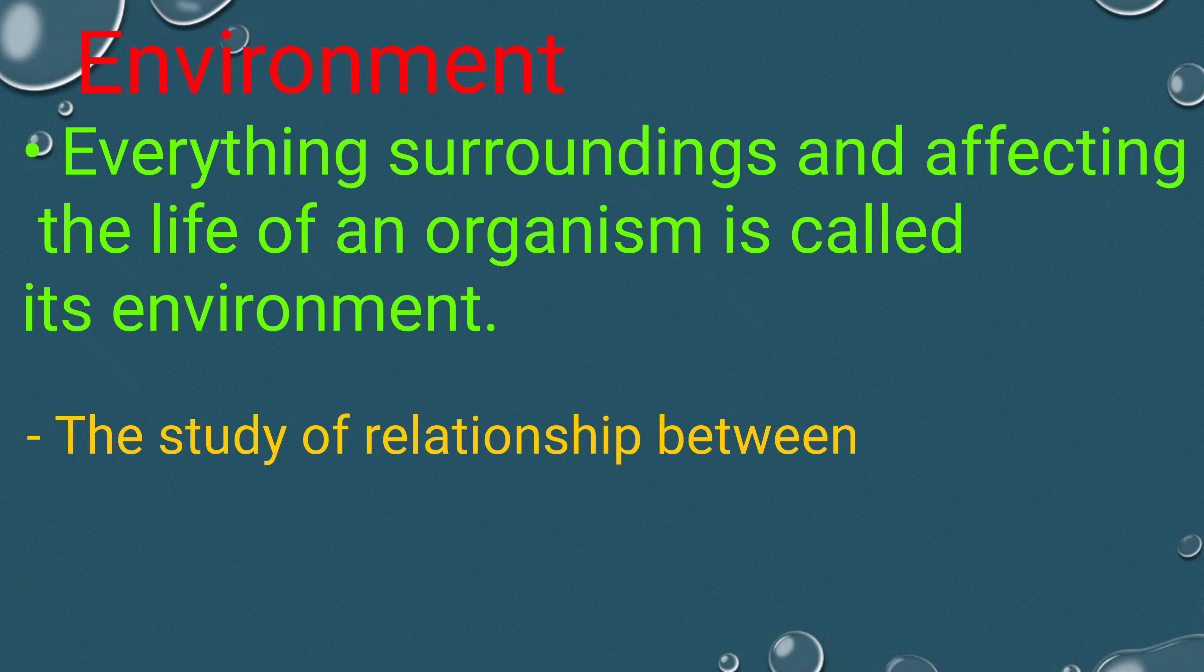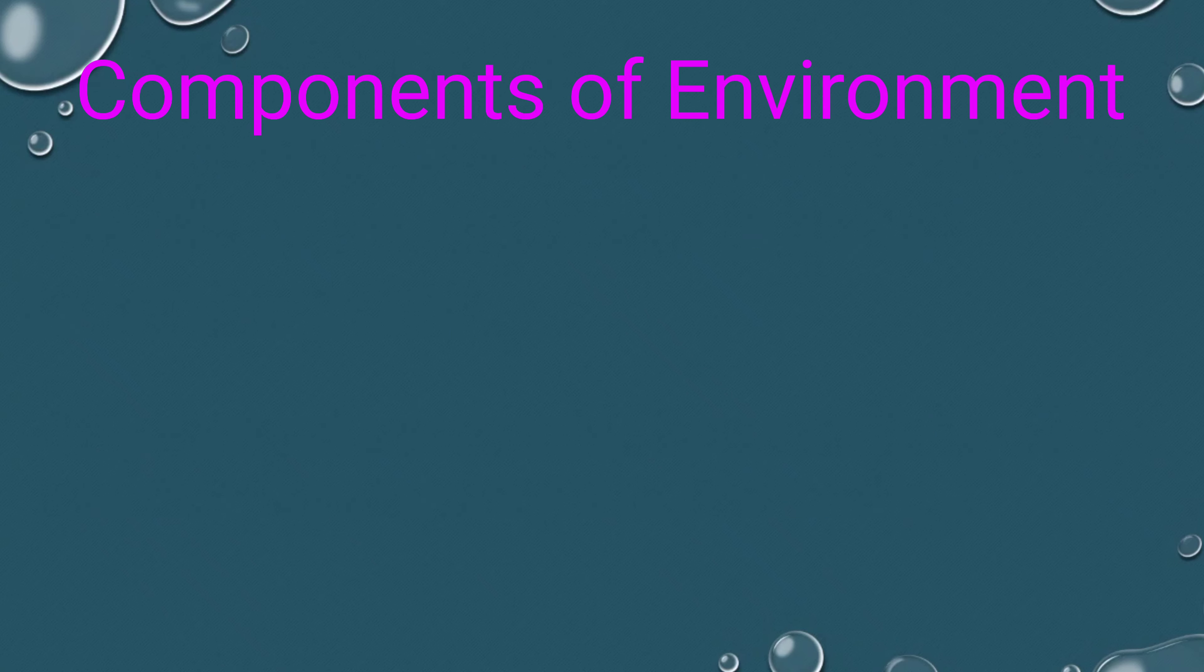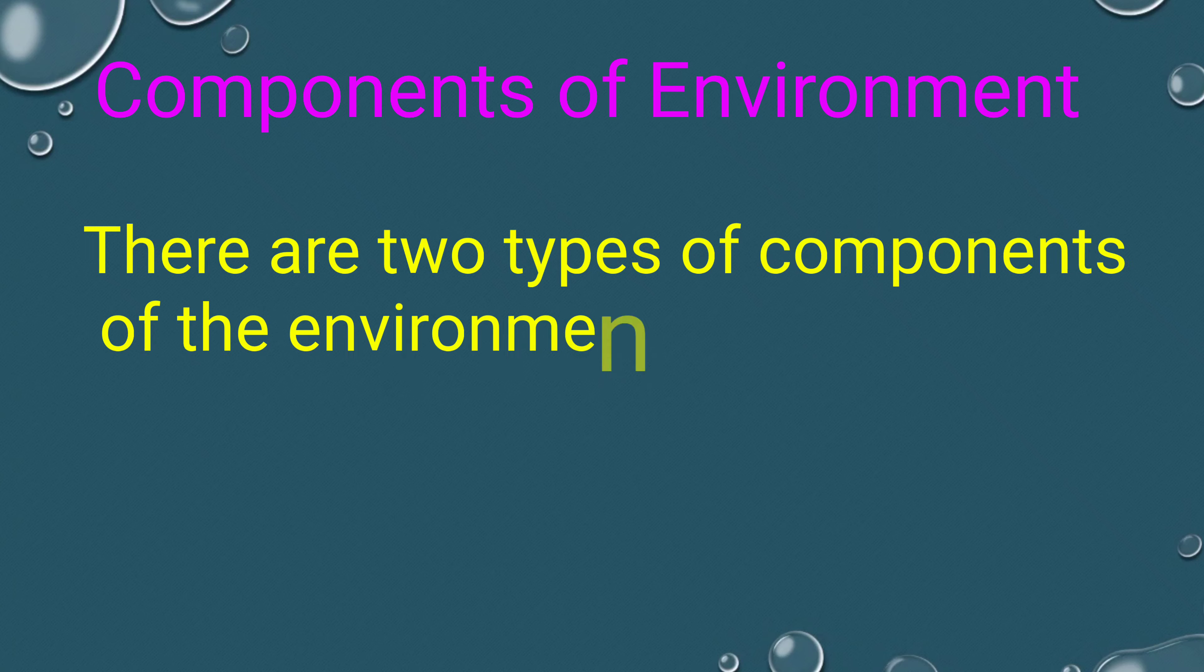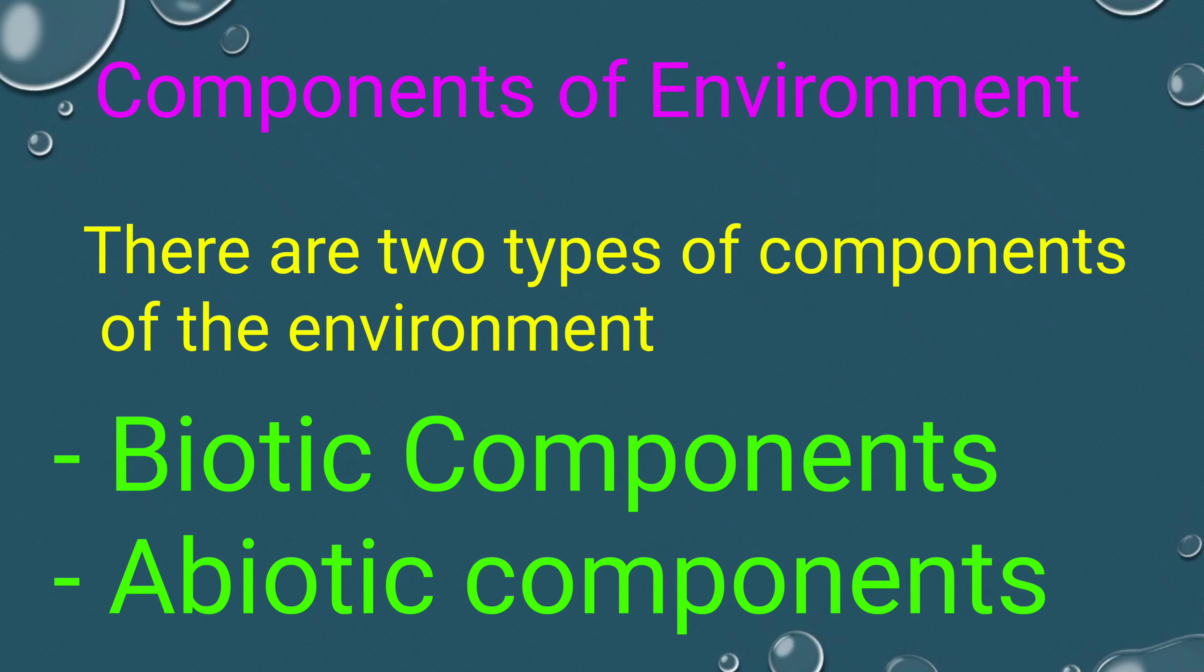The study of relationships between living things and their environment is called ecology. There are two types of components of the environment: biotic components and abiotic components.